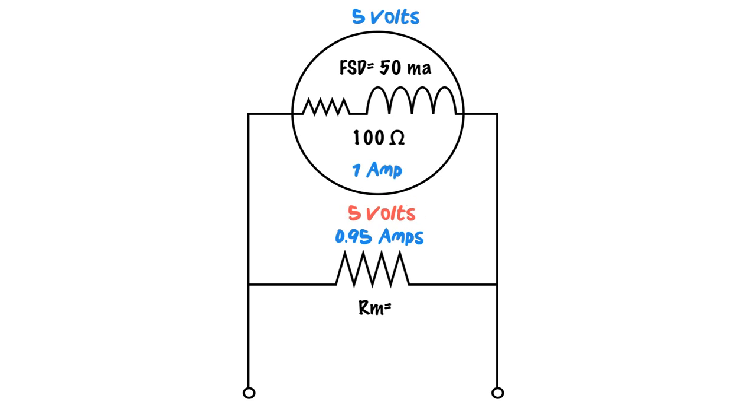If I have 5 volts and 950 milliamps or 0.95 amps, I can determine that my resistor value is 5.26 ohms just by using Ohm's law. 5 divided by 0.95 gets us 5.26 ohms.